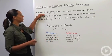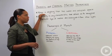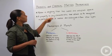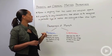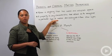Let's remind ourselves that matter is anything that has mass and occupies space. So you and I, we are matter. And then a property is any characteristic that allows us to recognize a particular type of matter and distinguish it from other types.